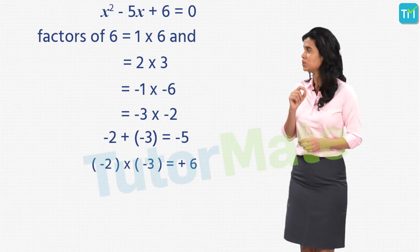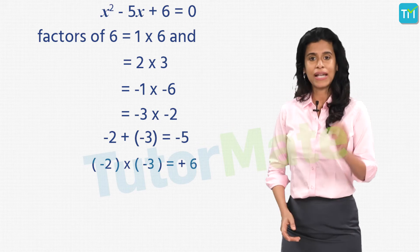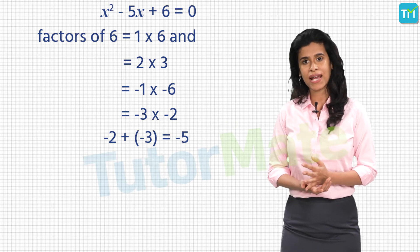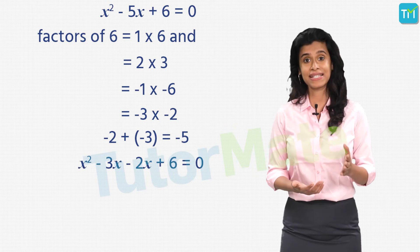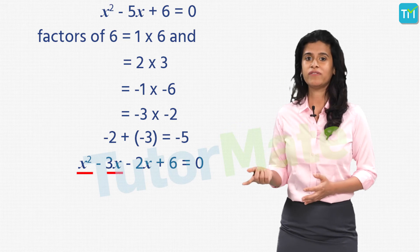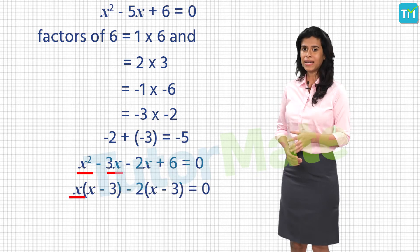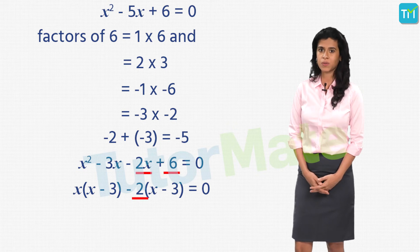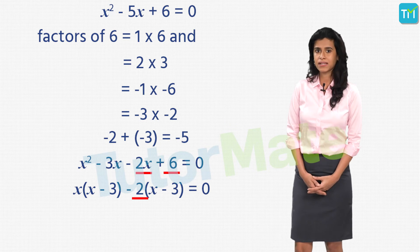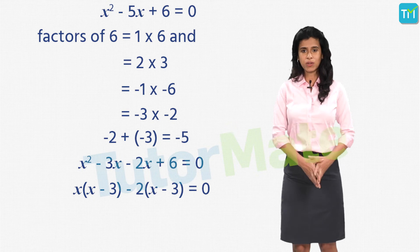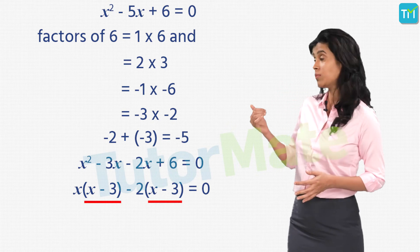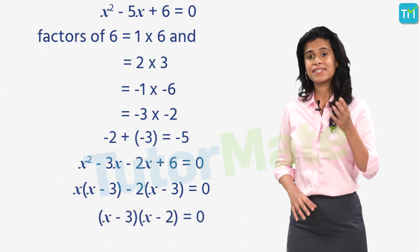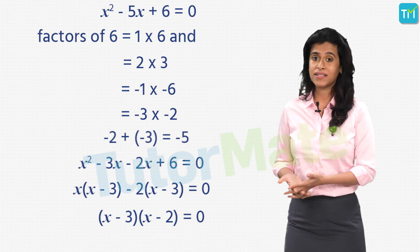At the same time, minus 2 into minus 3 is also equal to plus 6. So now we will split the middle term minus 5x into minus 3x minus 2x and rewrite the equation as x squared minus 3x minus 2x plus 6 is equal to 0. Taking x as a common factor from the first 2 terms, we have x multiplied by (x minus 3), and then taking minus 2 common from the next 2 terms, we have minus 2 into (x minus 3) equal to 0. We see that the term (x minus 3) is common throughout the LHS, so we take (x minus 3) as common and get (x minus 3)(x minus 2) equal to 0.